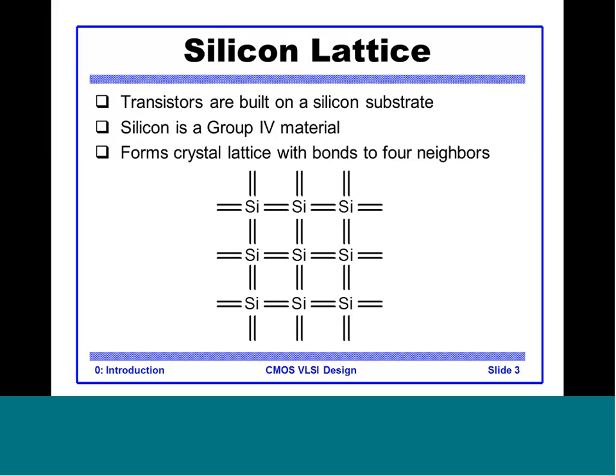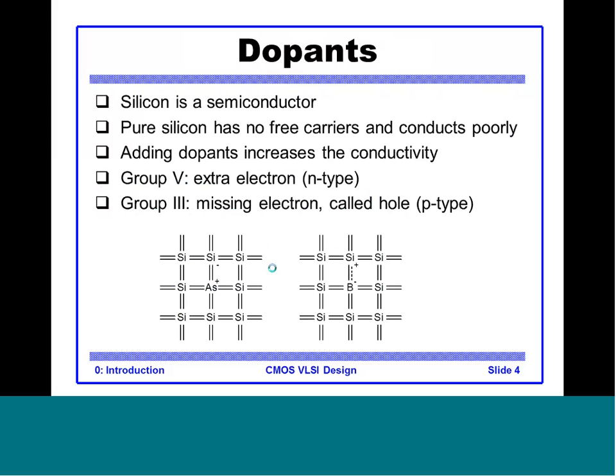Let us have a quick look at the silicon lattice. Silicon is the most popular material for VLSI designs; transistors are grown from a silicon substrate by deposition and etching. Being a Group 4 material, silicon forms a closely bonded crystal lattice with each silicon atom bonded to 4 nearest neighbors. Silicon is neither a conductor nor an insulator — it is a semiconductor. Pure silicon has no free carriers since all 4 bonds are satisfied, making it a very poor conductor.